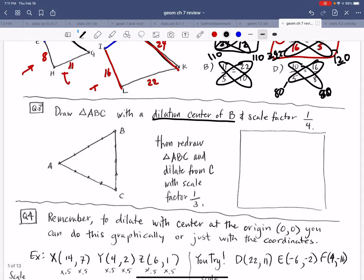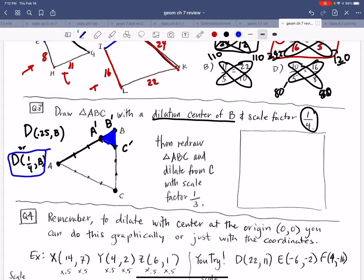Number three is saying dilate from a center of B, a scale factor of 1/4. That means B prime is going to stay at the same location, and A will change. I cut that in half and cut it in half again. This will be the location of A prime because I shrunk it. And I can do that with C. C was here, and I'm going to shrink it by 1/4. So now that's my new shape.